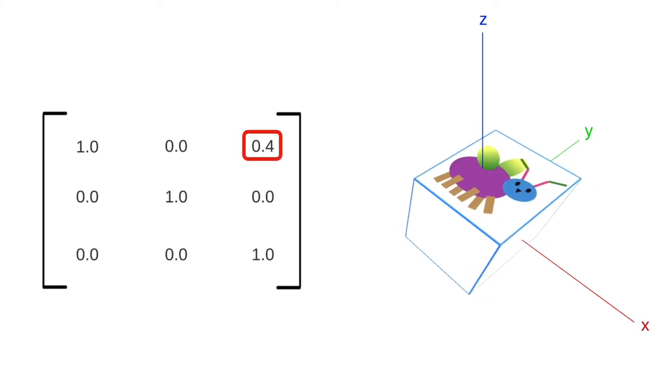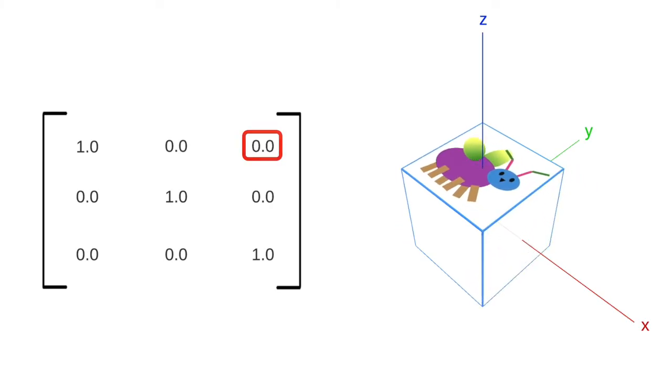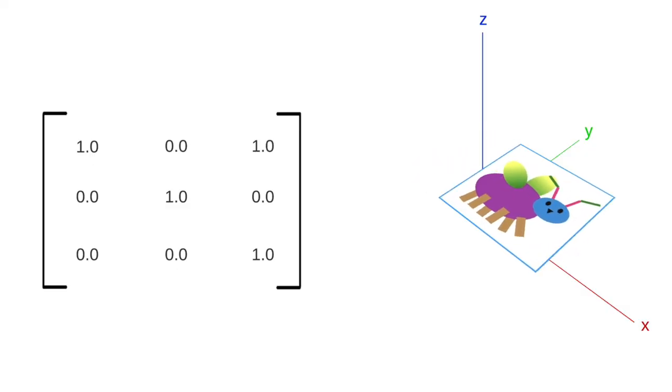Indeed, this matrix is a shear along the x-axis. But if we hide the rest of the cube, you can see that the top face is just translating.